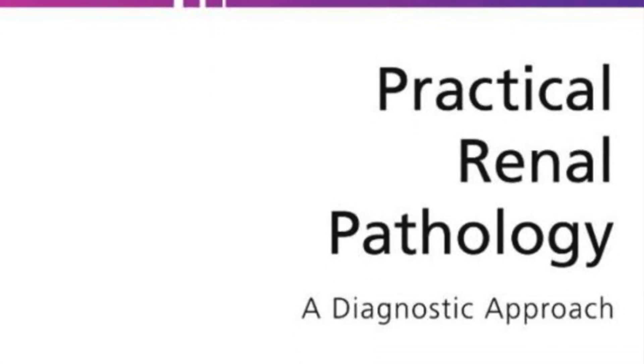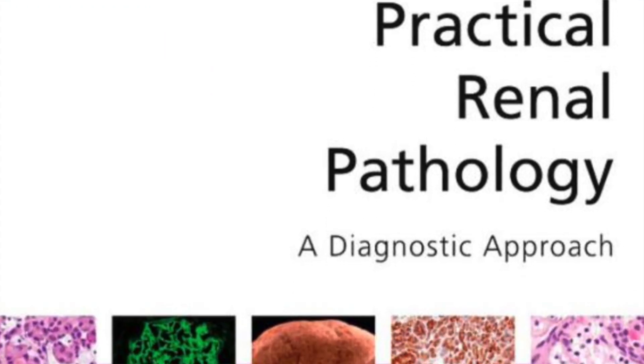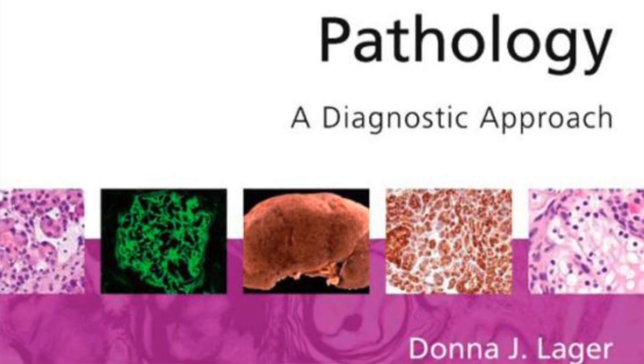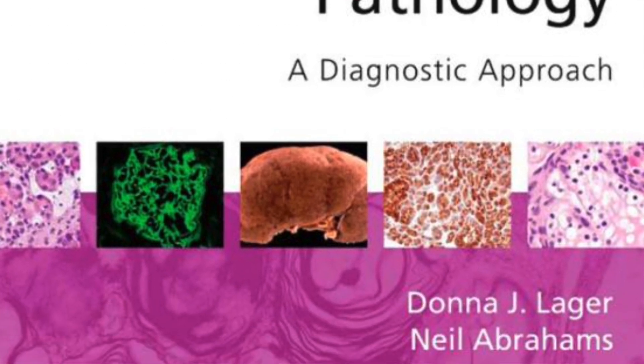The Biopsy Interpretation series does offer smaller books for gynae, GU, head and neck, and soft tissue as well. So if you want something less thick and more to the point, the Biopsy Interpretation series is always a good choice. If you want a bigger, more reference-style book, the Pattern Recognition series is really good not only for soft tissue but also for medical renal pathology. And you can't go wrong with any book in the Diagnostic Pathology series.